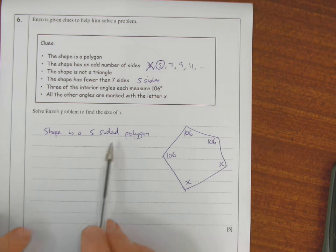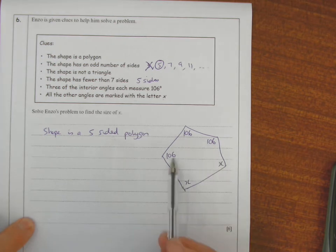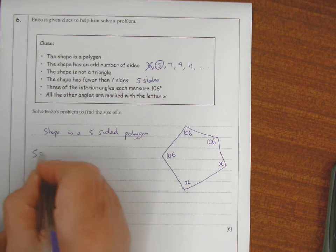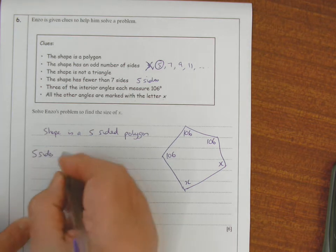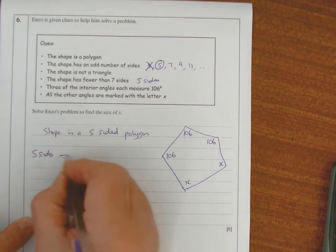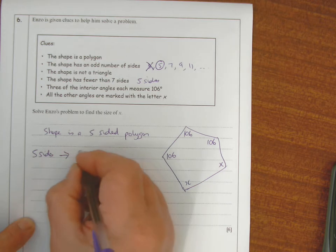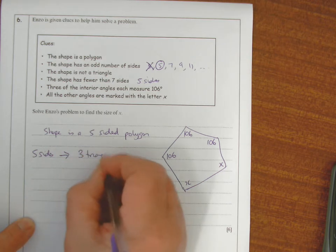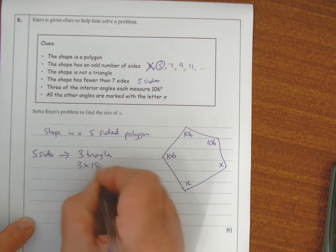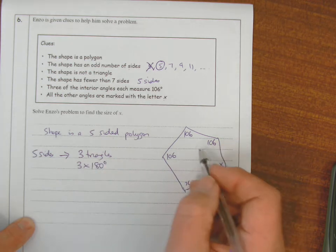Okay, now if it's a five-sided polygon, I can calculate what the interior angles add up to. So five sides, when I take away two, that means I've got three triangles. I can make three triangles, so I do three lots of 180 degrees to find out what the total is.